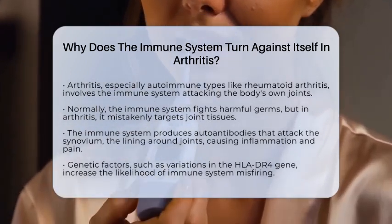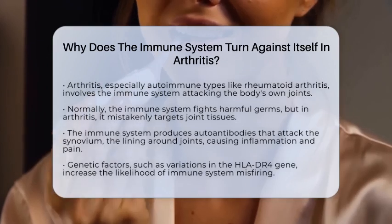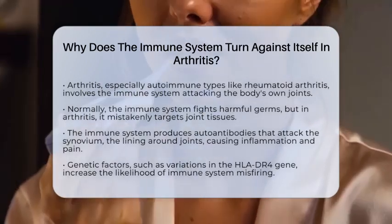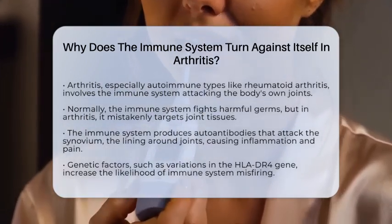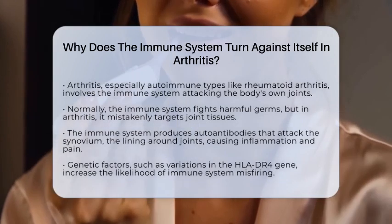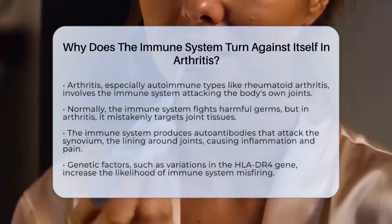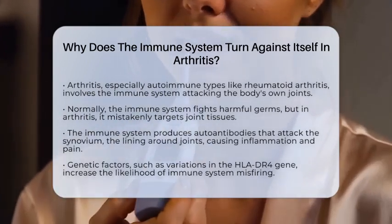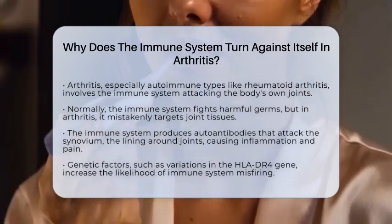Normally, the immune system produces antibodies that target bacteria and viruses to keep you safe. But in autoimmune arthritis, it makes antibodies that attack the synovium, which is the thin lining around your joints.